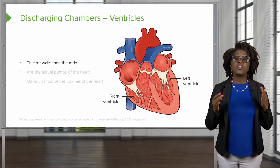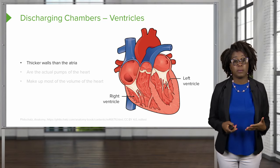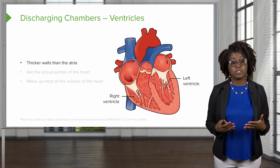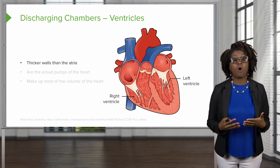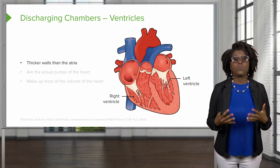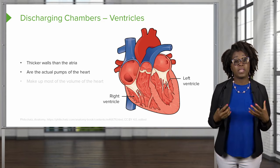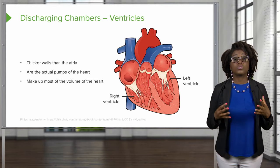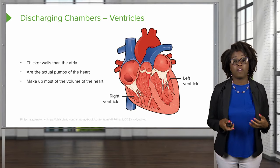The next chambers are our discharging or pumping chambers, referred to as ventricles. These have much thicker walls than the atria because they are involved in the actual pumping of the heart. The ventricles also make up most of the volume of our heart.